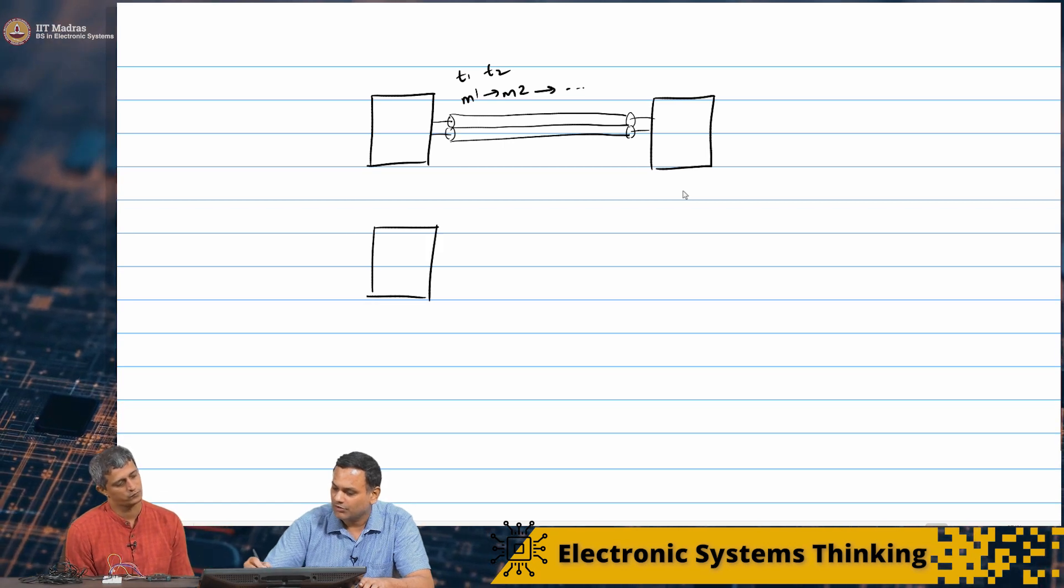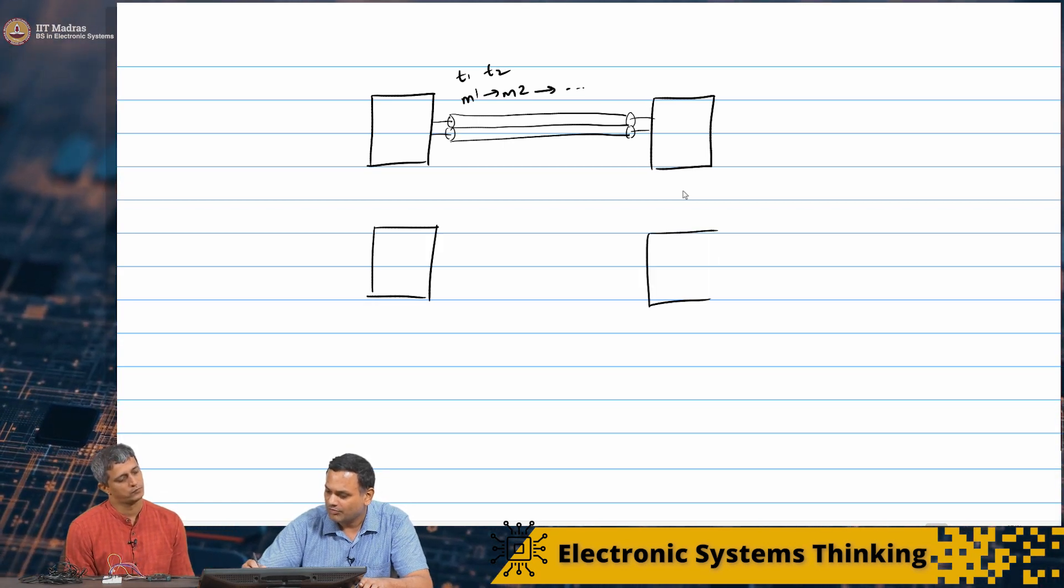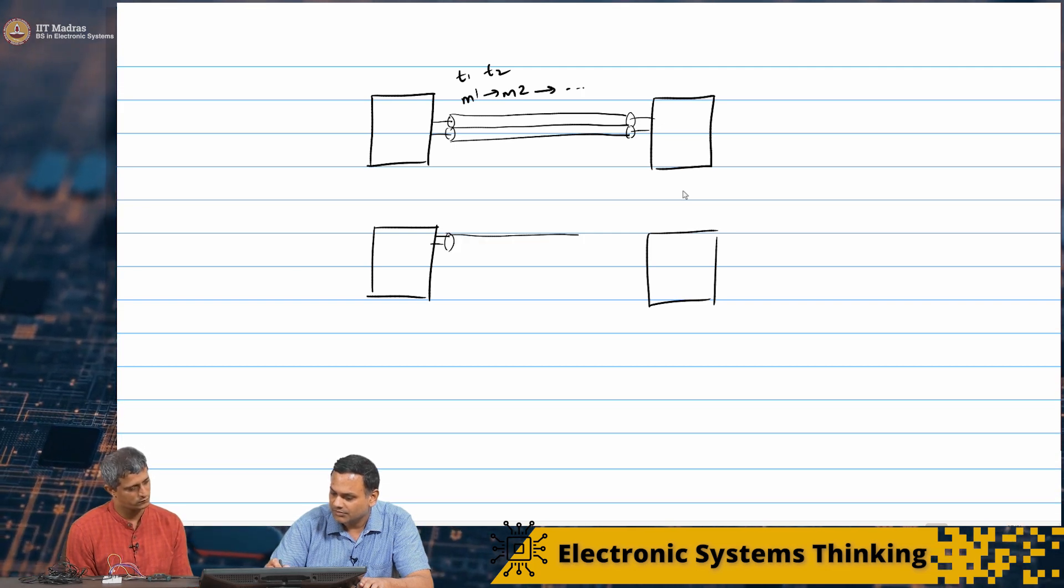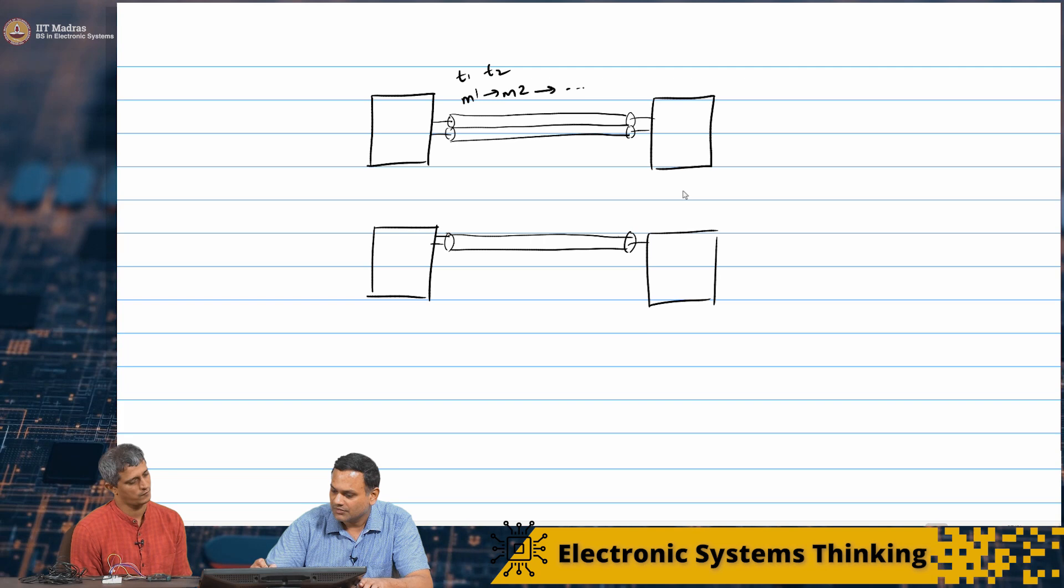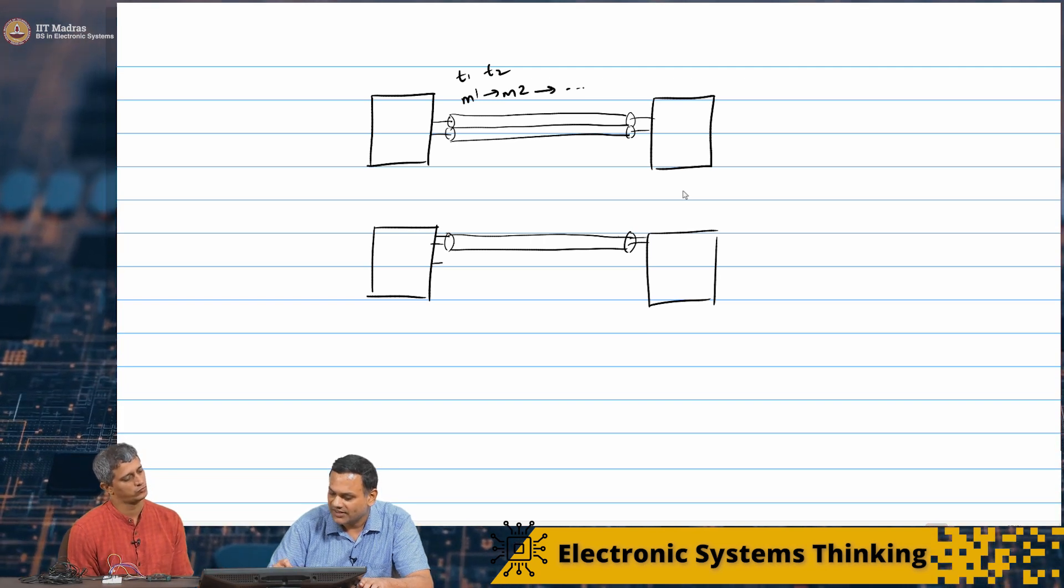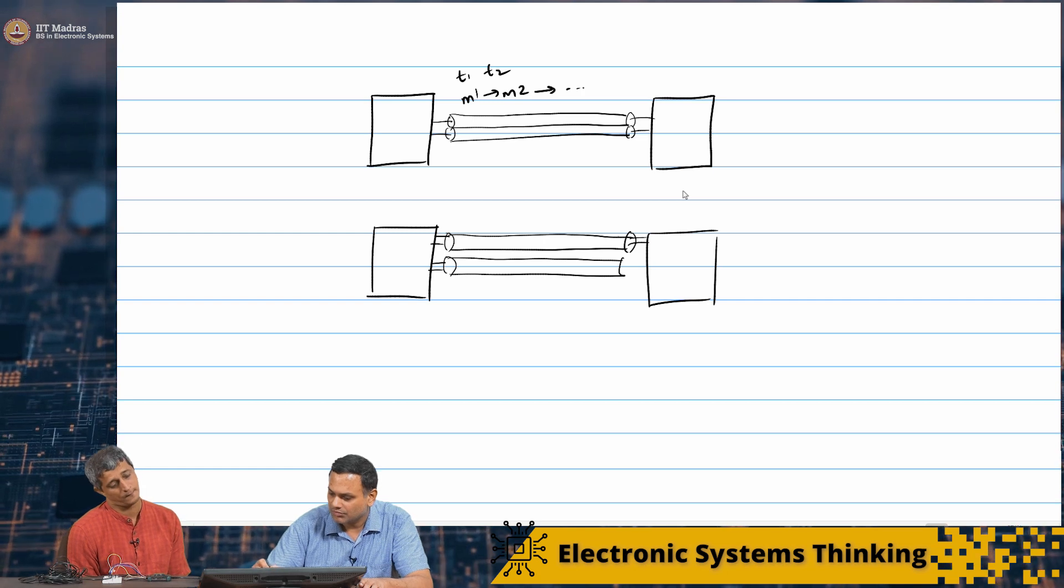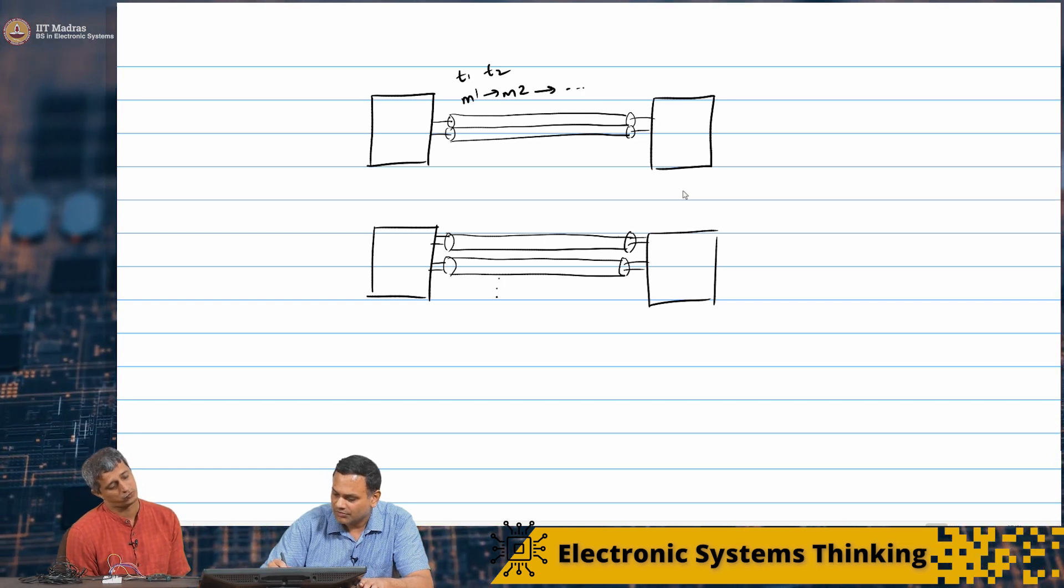So you could have a lot of parallel lines. So I could have one set, one more set and so on. You could have as many as several tens or even hundreds of lines.